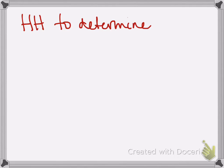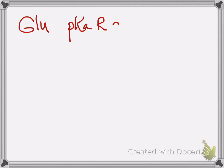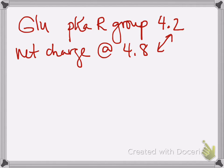I got a request from a student who wanted to know how to use Henderson-Hasselbalch to determine a partial charge on an amino acid. So let's take glutamic acid as an example. The pKa of the R group is 4.2. If you were trying to find the net charge on this amino acid at pH 4.8, those numbers are really close to each other — not two pH units away, which we've talked about before as resulting in all or nothing for the deprotonated or protonated groups.